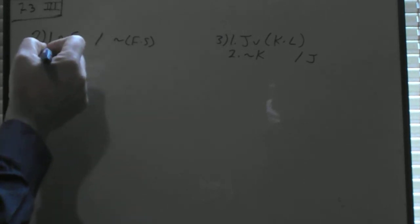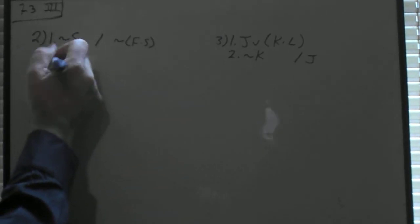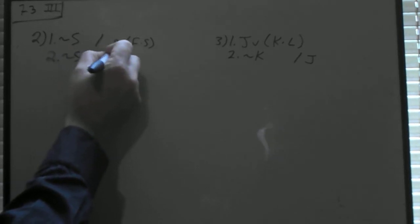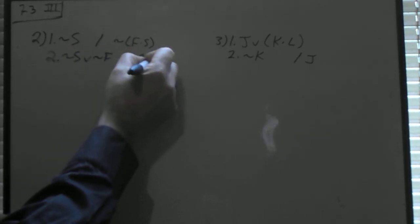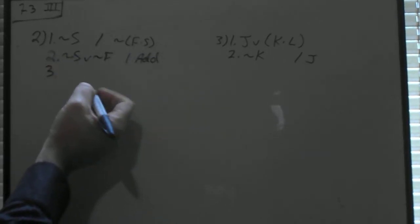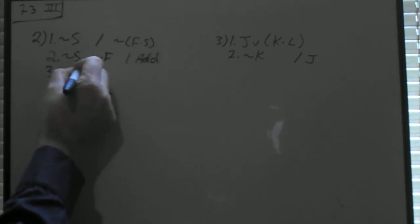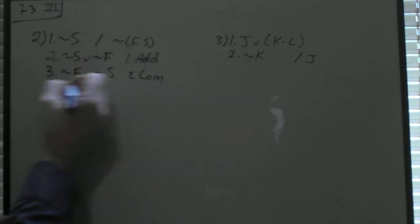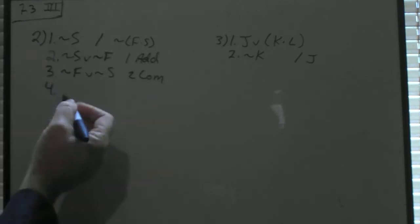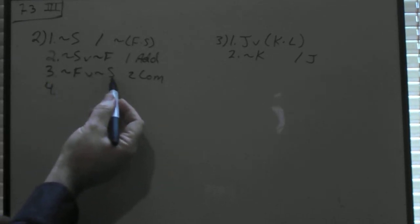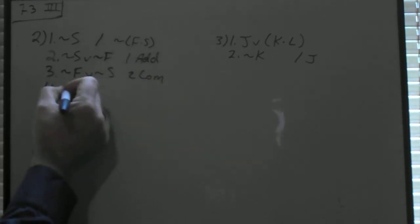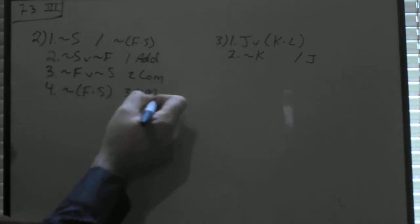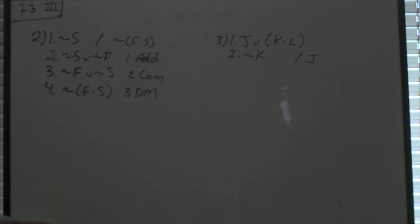So on line 2, we're going to take that not S and use addition to add a not F. And then in this case, commutativity is useful, not F or not S, and then as we saw a moment ago, not F or not S through DeMorgan's becomes not F and S. And so that one is solved.